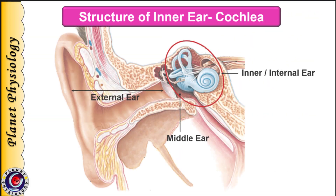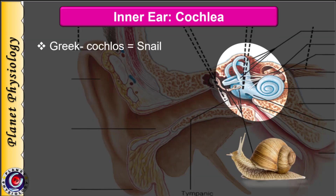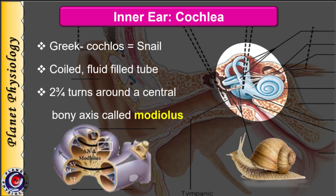Let's begin with the session. As we have seen earlier, ear is divided into three parts: external, middle, and inner ear. Inner ear contains two functionally different parts: vestibular apparatus and cochlea. Vestibular apparatus is associated with equilibrium while cochlea is concerned with hearing. The word cochlea has Greek origin where 'cochleus' means snail. Cochlea is a coiled fluid-filled tube. It makes two and three-quarter turns around the central bony axis called the modiolus.